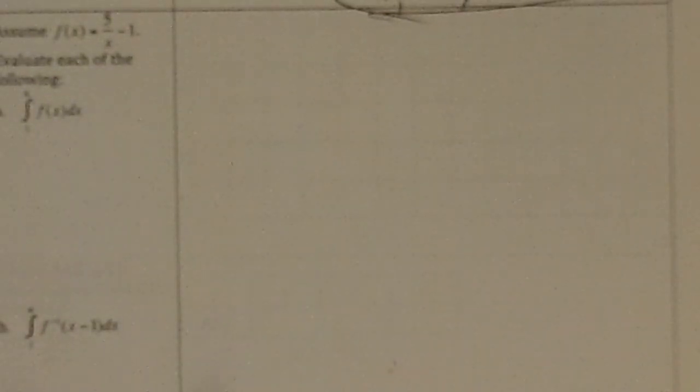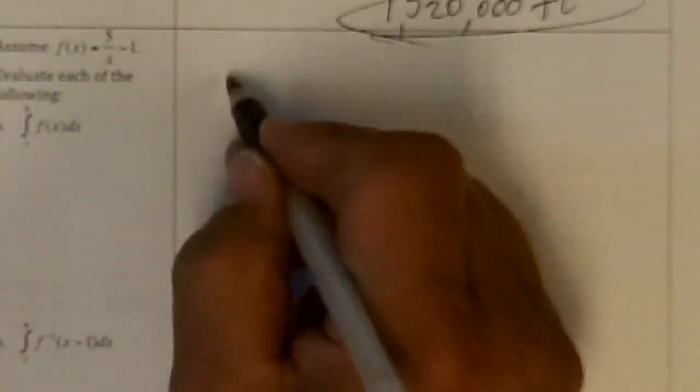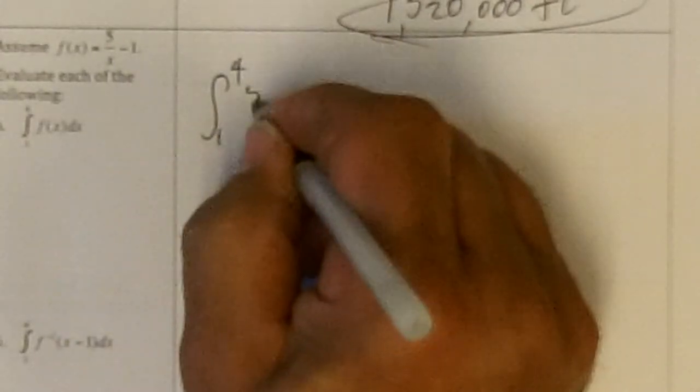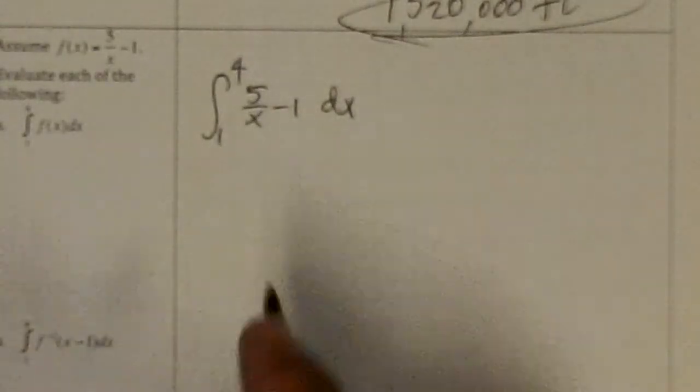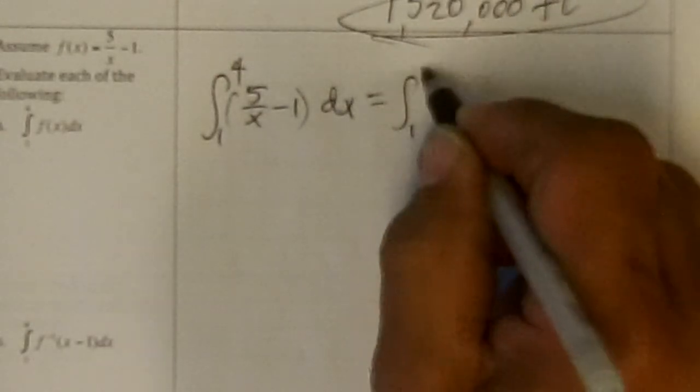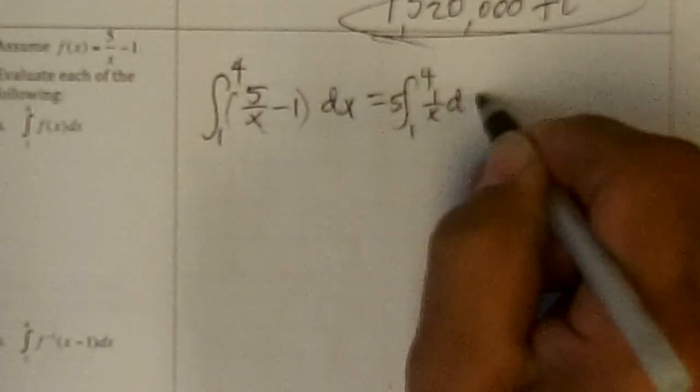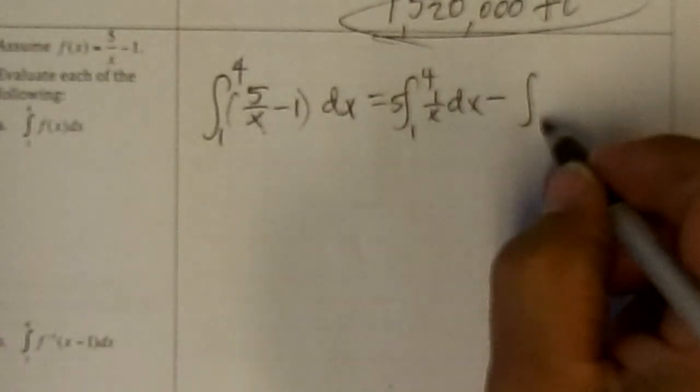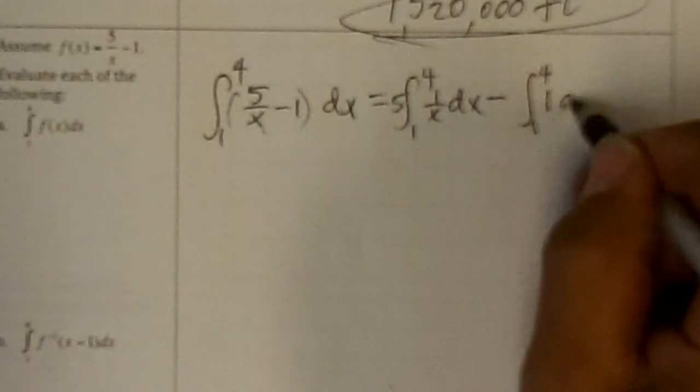Number 6, evaluate each of the following. So we have the integral from 1 to 4 of 5 over x minus 1 dx. Well, this becomes the integral from 1 to 4, the 5 would come out of the first part and then 1 over x dx minus the integral, there's no 5 on this one, from 1 to 4 of 1 dx.